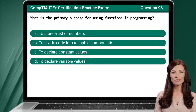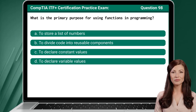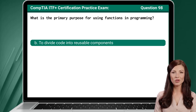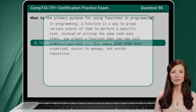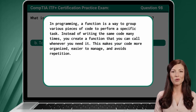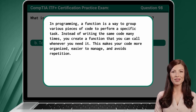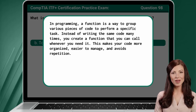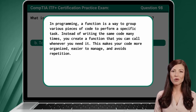Question 98. What is the primary purpose for using functions in programming? The answer is B: to divide code into reusable components. In programming, a function is a way to group various pieces of code to perform a specific task. Instead of writing the same code many times, you create a function that you can call whenever you need it. This makes your code more organized, easier to manage, and avoids repetition.